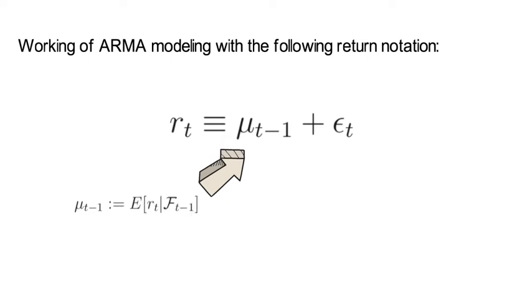So that's the one-step-ahead prediction, and εt is the spread between the realized return in t and the conditional forecast. That is the one-step-ahead forecast error.